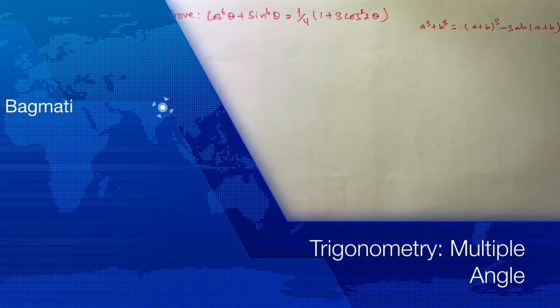Hello, welcome to our new video. Today we have another question: cos⁶θ + sin⁶θ = ¼(1 + 3cos²2θ). This is our question.